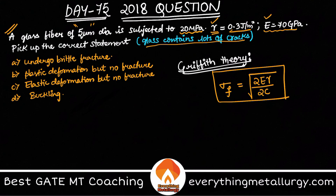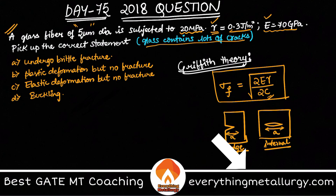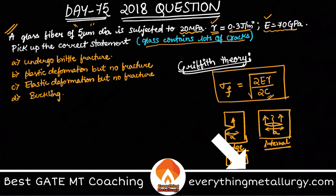Here c is the crack length. For an edge crack, the full crack length a is taken as c. For an internal crack (also called a central crack), there are two stress concentrator tips, so one internal crack acts as two edge cracks. Therefore you split the total length: a/2 is taken as c. This is an important distinction.